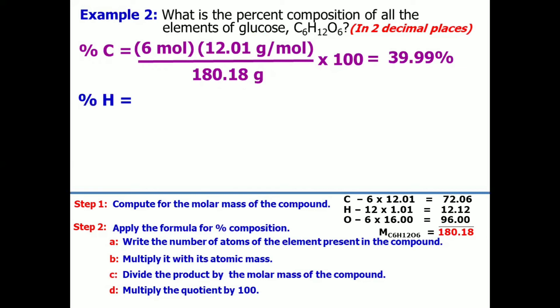How about for hydrogen? Based on the formula, we have 12 moles of hydrogen. And its atomic mass is 1.01 grams per mole and divide it by 180.18 grams, which is the molar mass of glucose. Then, times it by 100. What is your answer? You got it right. It is 6.72%.